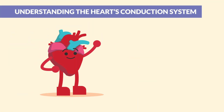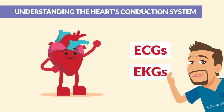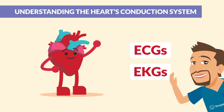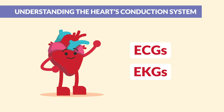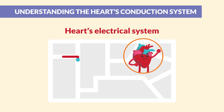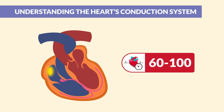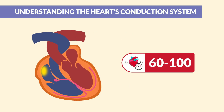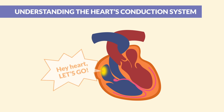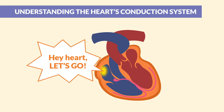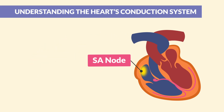To really master ECGs or EKGs — a little hint, it's the same thing — we gotta start with the basics of how the heart works. Think of your heart's electrical system kind of like a road trip, and the electrical flow like your GPS directions. The first stop is the SA node. This is the heart's natural pacemaker, sitting all chill in the right atrium, firing off signals 60 to 100 beats per minute. It's the one that shouts, 'Hey heart, let's go.' So remember, it all starts at the SA node.